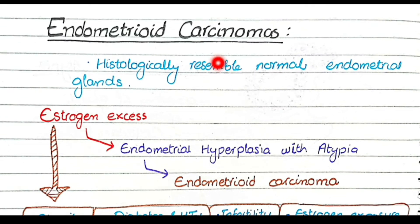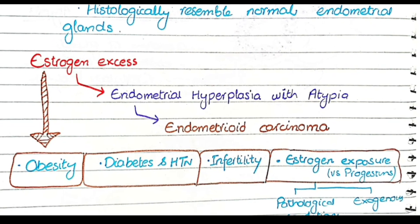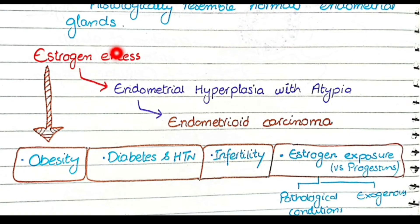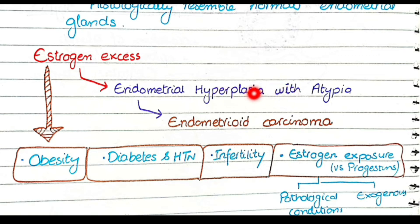Endometrioid carcinoma, as the name implies, is called endometrioid because it histologically resembles the normal endometrial glands. It results when there is estrogen excess, resulting in an increased estrogen-to-progesterone ratio. This increased estrogen causes endometrial hyperplasia — either without atypia, which has low risk of progression to cancer, or with atypia, which can progress to endometrial carcinoma over time.